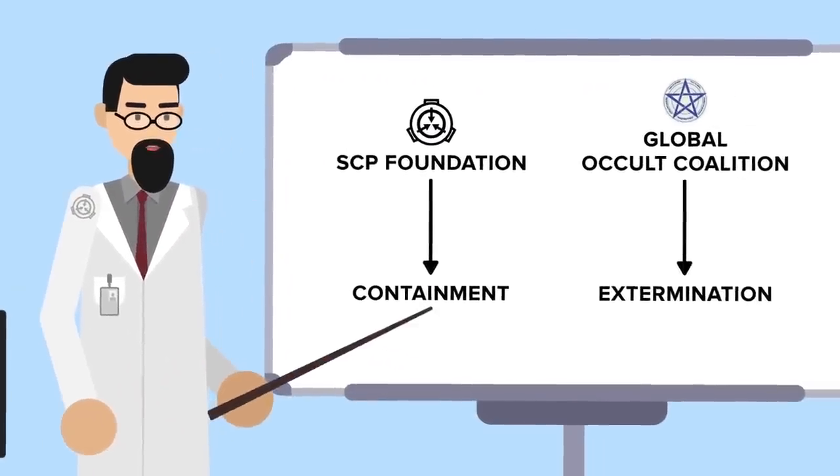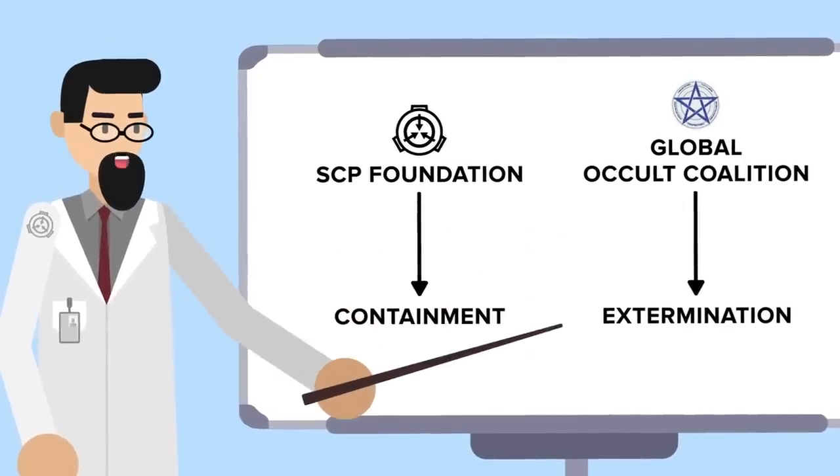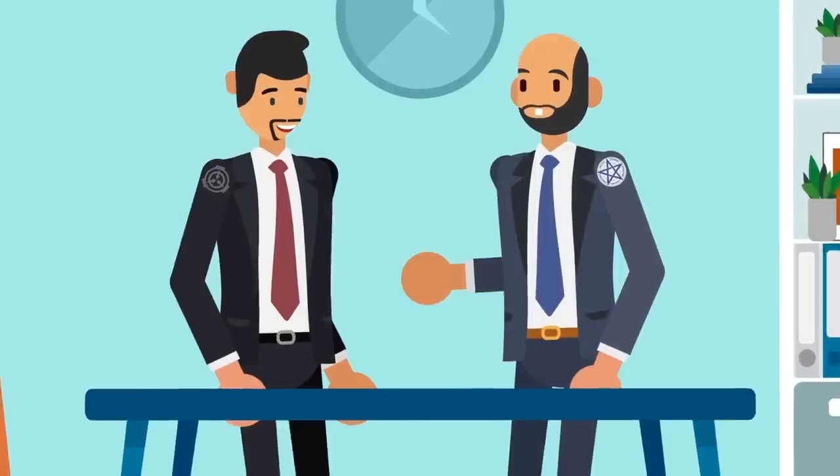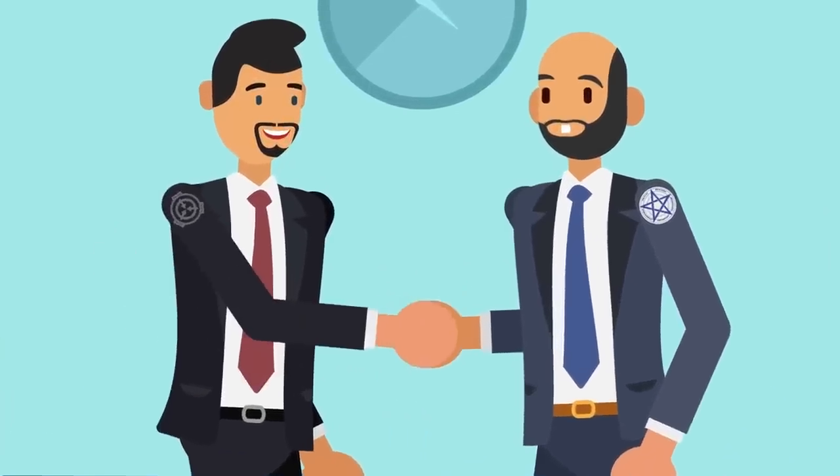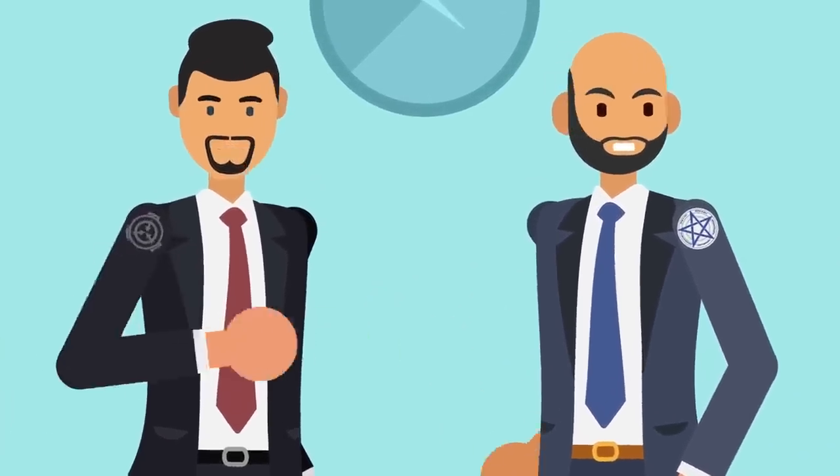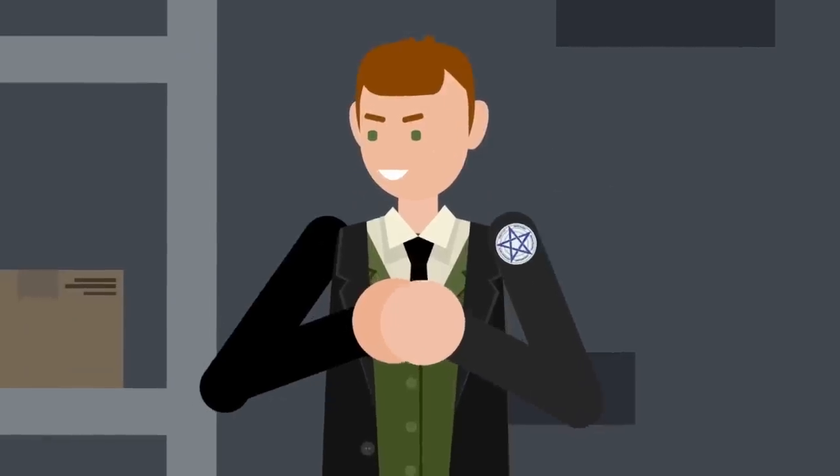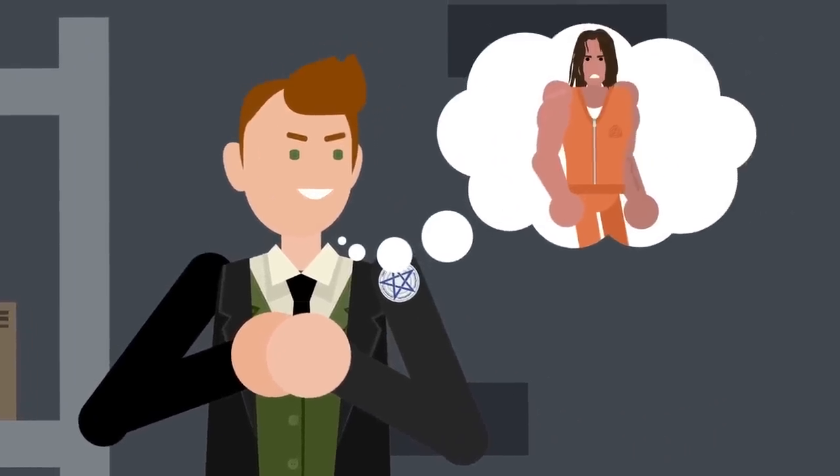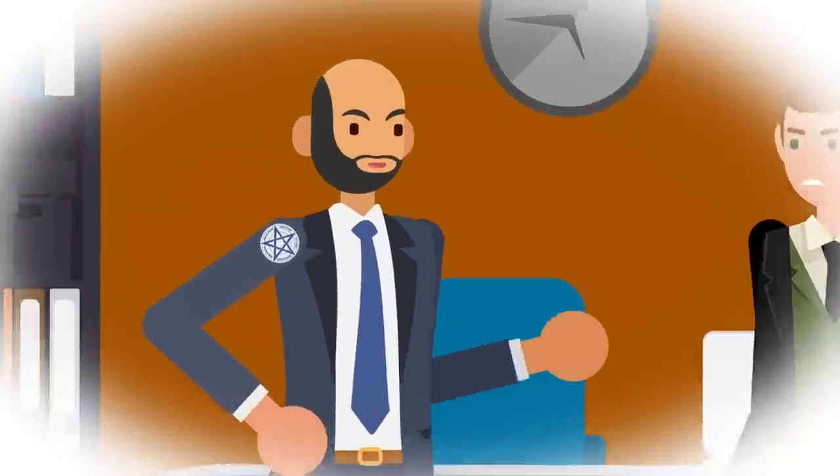Their ultimate goal was a world rid of all anomalies. While the Foundation opted for containment, the Coalition preferred extermination. But despite this fundamental difference in their operational structures, the two organizations maintained a fragile alliance, which is why Agent Lane needed bait in order for his plan to work.